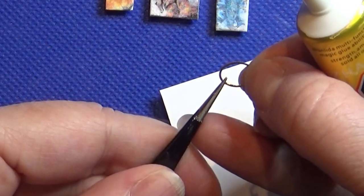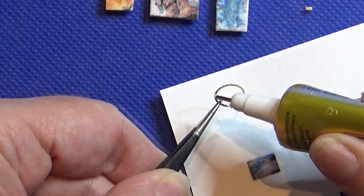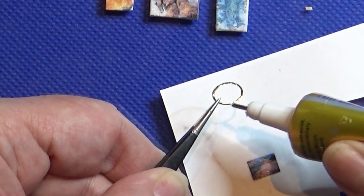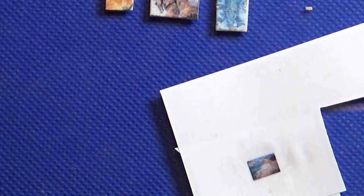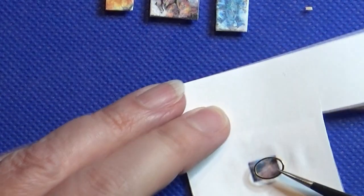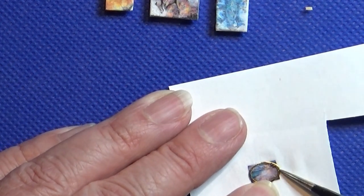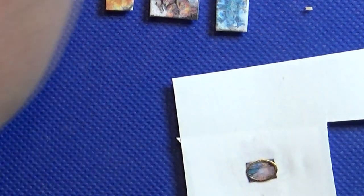Then I just glue this little frame over the picture and leave it to dry. When it's all dry, I'm just cutting it out.